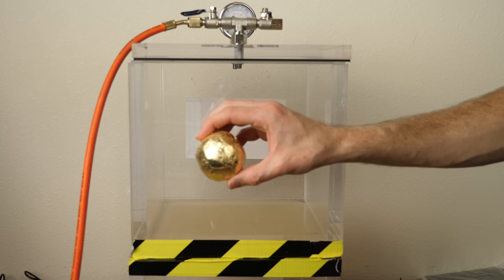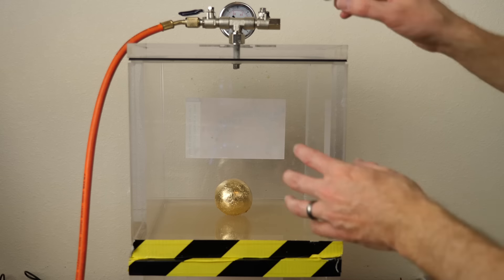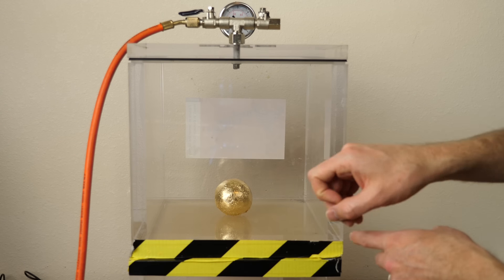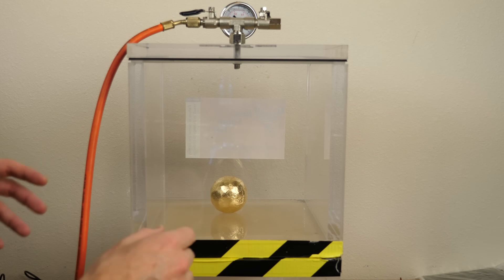So first let's see what happens when I put my gold foil ball in the vacuum chamber. And then we'll test dropping the gold leaf by itself. Japanese gold foil ball in the vacuum chamber.